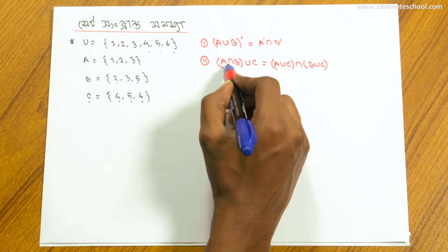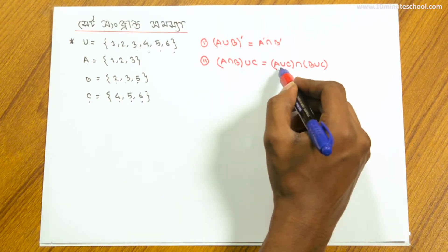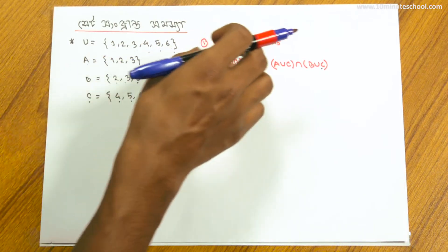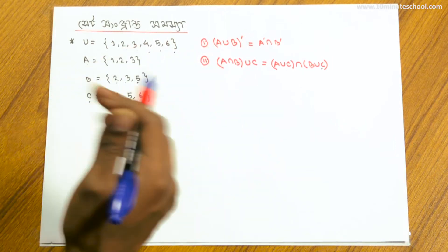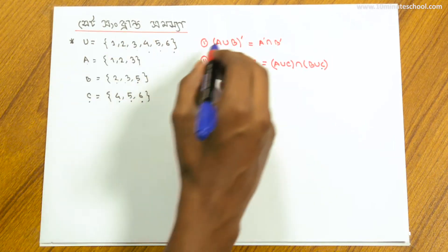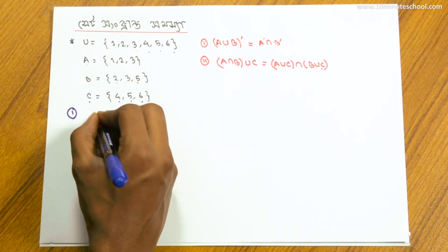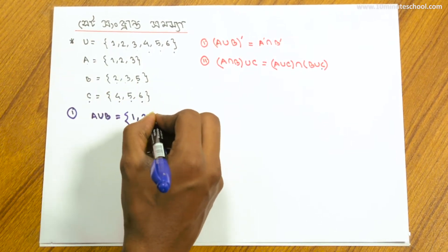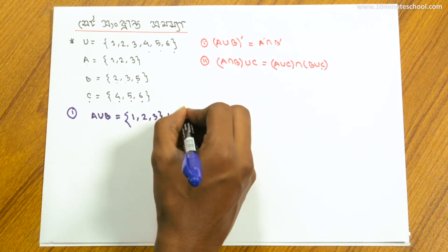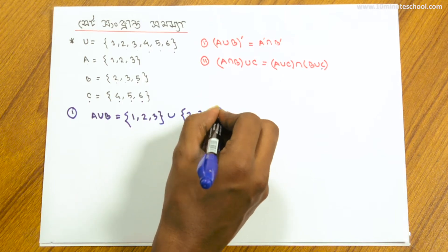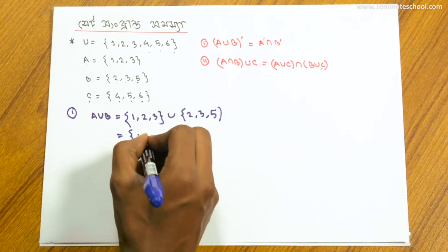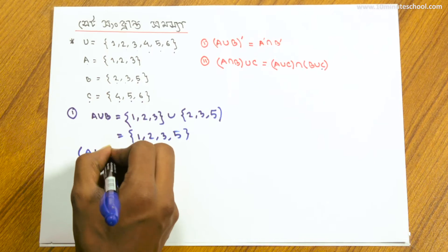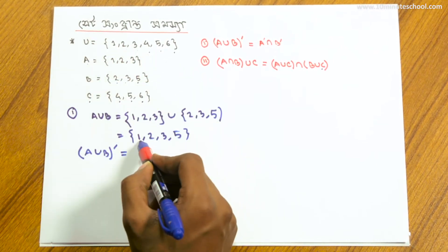A intersect (B union C) is equal to (A union C) intersect (B union C). So, A union B equals A union B. We verify that A union B is equal to A union B.